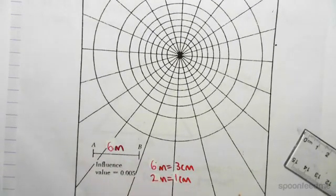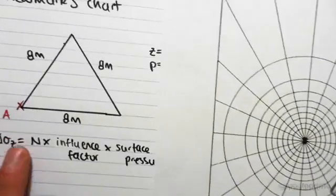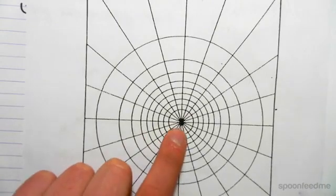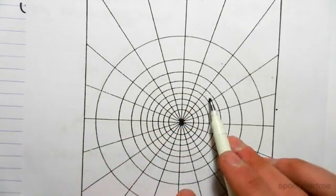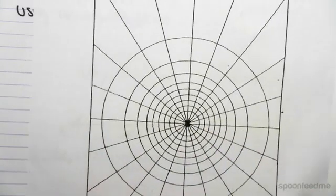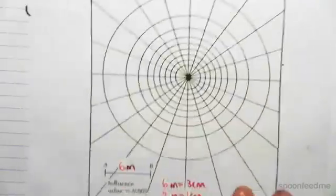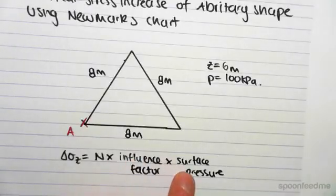So, we're going to come and scale our drawing on here, putting the point we're interested in, so point A, at the center of this diagram. And then, we're literally going to count the number of these rectangles inside our shape, which is N. We're then going to times that by a given influence factor. So, for our diagram, the influence factor is 0.005. And then, times that by the surface pressure.